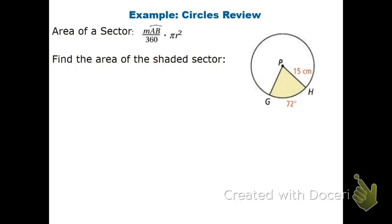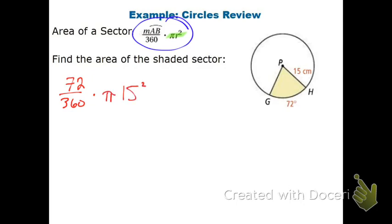For the last couple of problems: find the area of the shaded sector. For the area of a sector, I take the measure of the arc, divide it by 360, and multiply by the area formula. In this case, my arc is 72, so it's 72 divided by 360, times pi, times my radius of 15 squared. Calculating that gives 141.37, and since it's an area, the units are square centimeters.